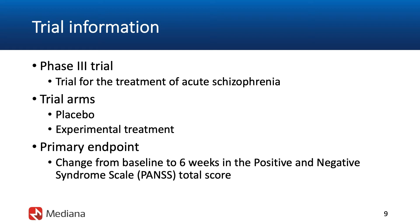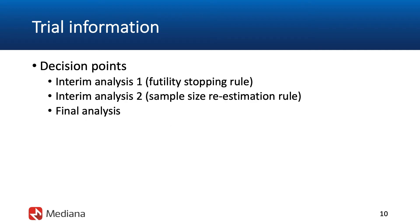This total score is continuous and assumed to follow a normal distribution. An important feature of this instrument is that a beneficial effect is associated with a reduction. So if we look at changes from baseline, a larger negative change — a larger reduction — would indicate a strong beneficial effect that a patient may experience in this clinical trial. A three-stage design with two decision points will be used in this adaptive trial. The first interim analysis will be done to support a futility assessment.